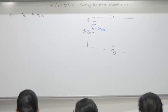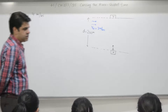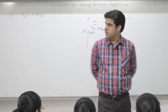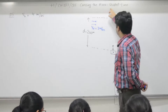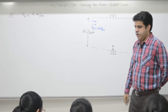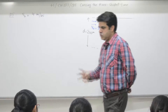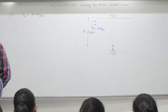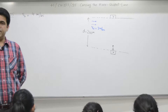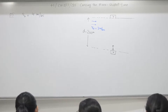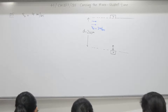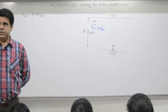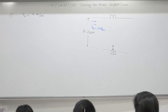Take one full page — rather two pages. On the left page: crossing the river in shortest time. On the right page: crossing the river in shortest path. Draw the diagram.